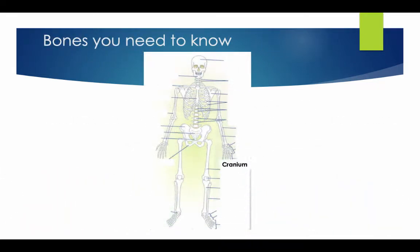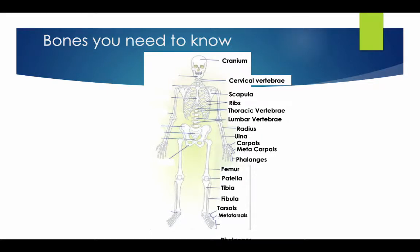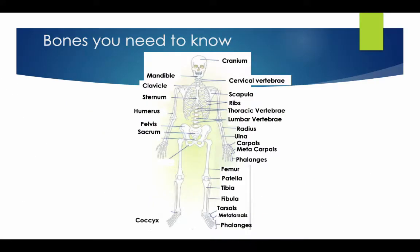The bones you need to know include: the cranium, the cervical vertebrae, the scapula, the ribs, the thoracic vertebrae, the lumbar vertebrae, the radius, the ulna, the carpals, the metacarpals, the phalanges, the femur, the patella, the tibia, the fibula, the tarsals, the metatarsals, the mandible, the clavicle, the sternum, the humerus, the pelvis, the sacrum, the coccyx, the ischium, and the talus.